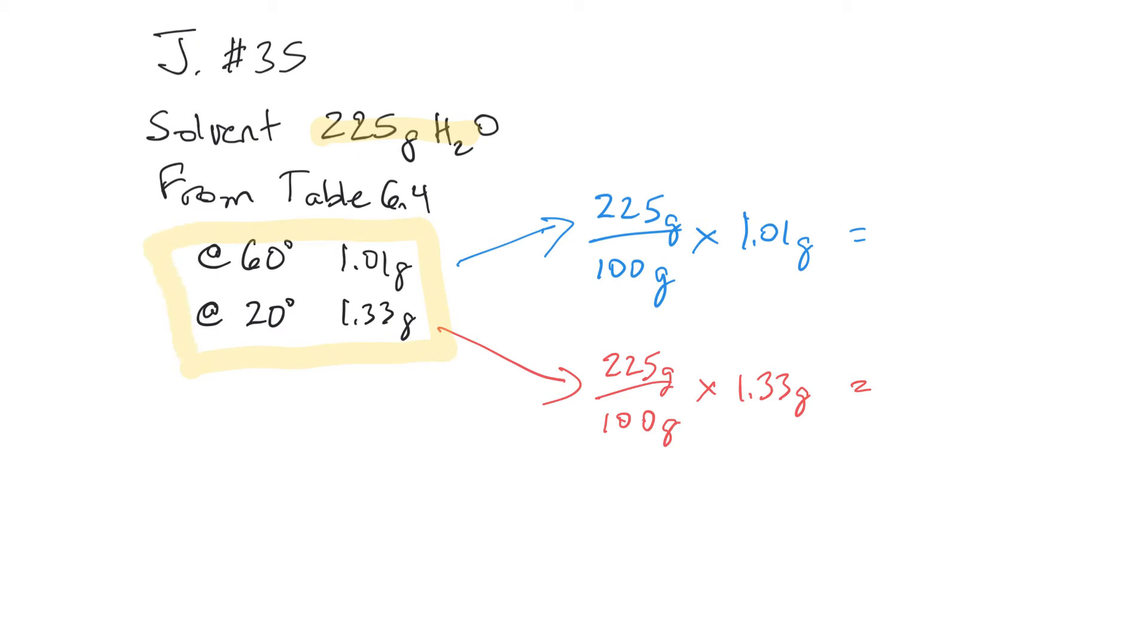So 1.01 grams will dissolve in 100 grams of water at 60 degrees, and you see the number for 20 degrees. So what we need to do is take the fact we have 225 grams—up here, 225 grams of water.